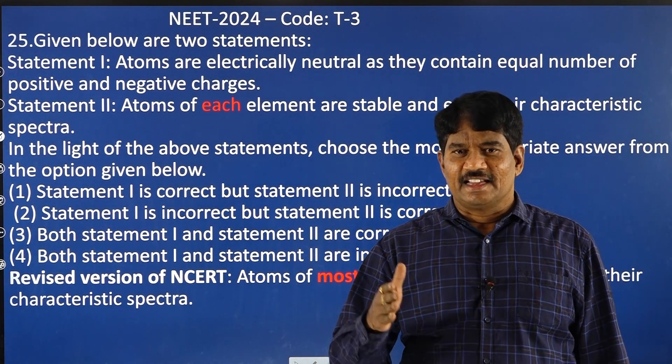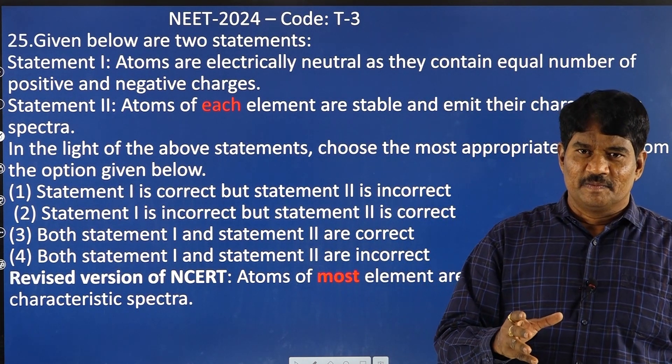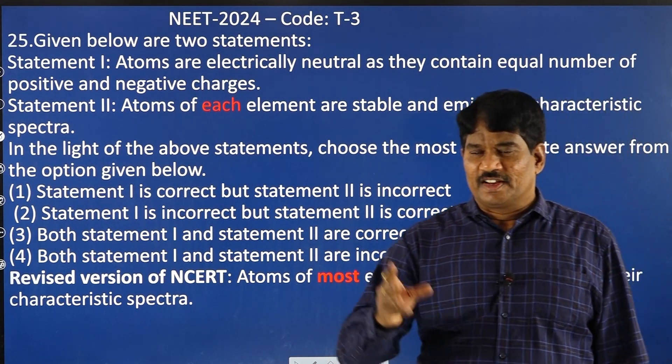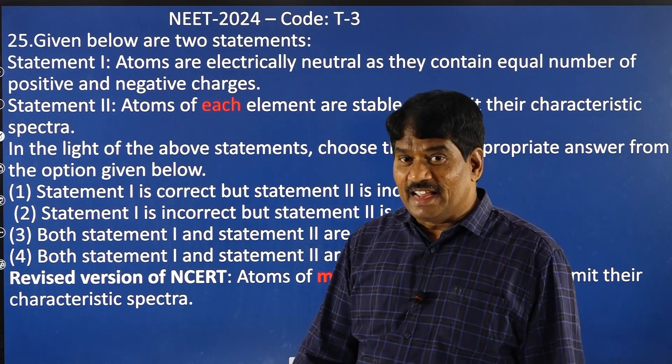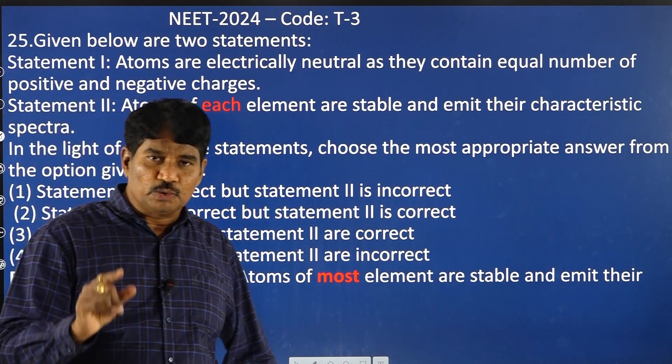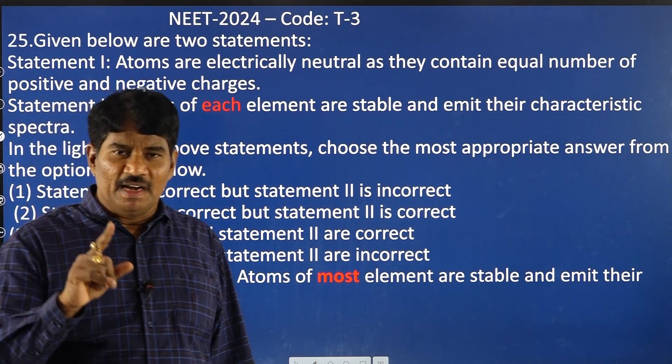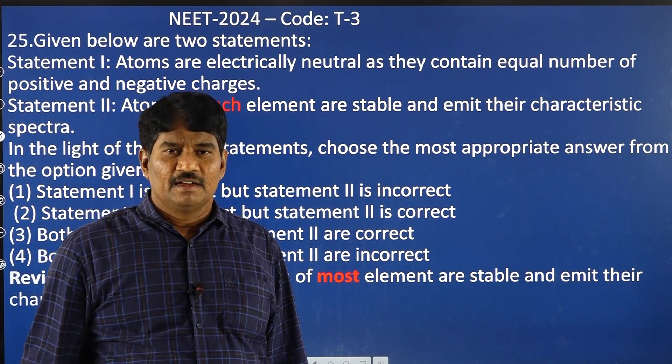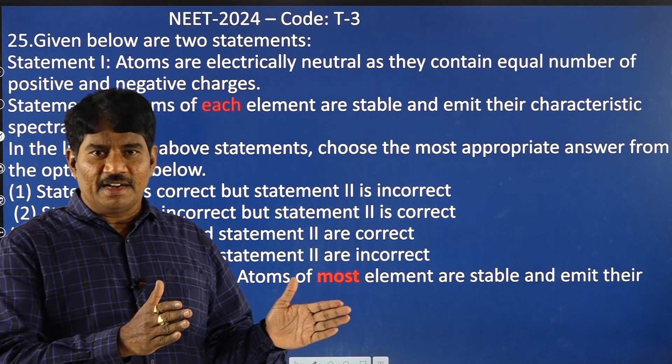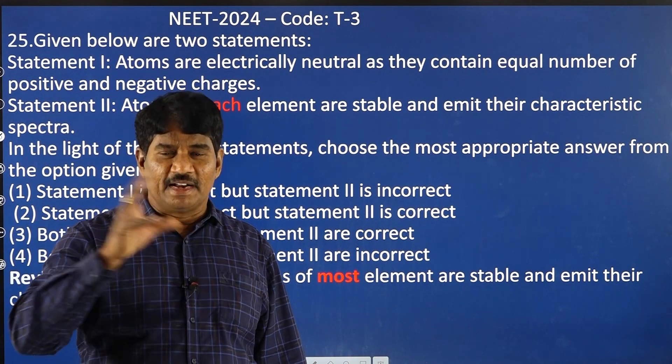If we consider this A category seats and the number of aspirants, the possibility ratio for getting into the medical college is one is to 45. That means for every 45 students who are competing or writing the NEET examination, there is a possibility for only one student to get into the medical college. That means how competitive it is.